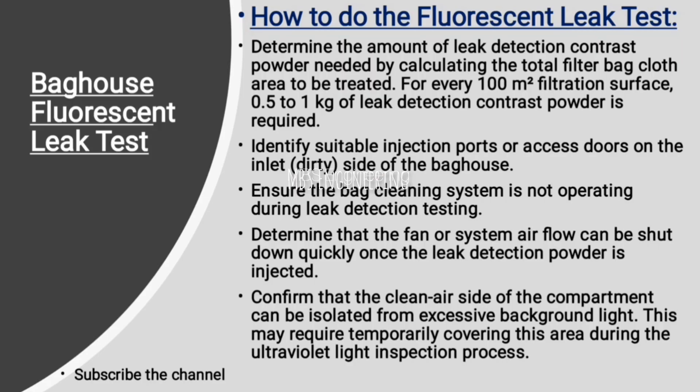How to do the fluorescent leak test. First step: determine the amount of leak detection contrast powder needed by calculating the total filter bag cloth area to be treated. For every 100 square meters of filtration surface, 0.5 to 1 kilogram of leak detection contrast powder is required. Next step: identify suitable injection ports or access doors on the inlet dirty side of the bag house. Next step: ensure the bag cleaning system is not operating during leak detection testing.